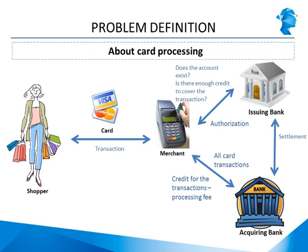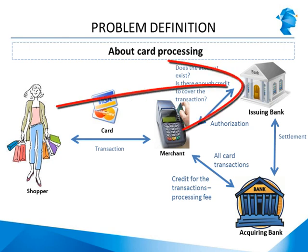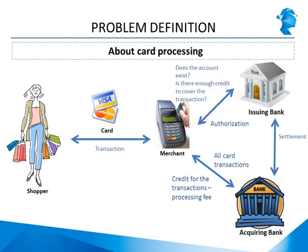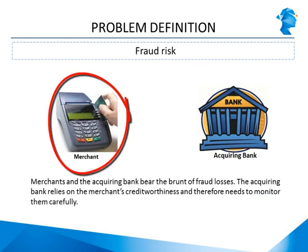Now, what happens in the case of a fraudulent transaction? In a fraudulent transaction, someone other than the cardholder has made the transaction. When the shopper sees the transaction on her credit card bill, she raises a complaint with the issuing bank, saying the transaction posted on her statement is not something she made and she does not want to pay for it. The issuing bank goes back to the acquiring bank — the seller's bank — and says the transaction it paid for was fraudulent, so it needs the money back. The acquiring bank then goes back to the merchant and demands repayment. It is ultimately the merchant who bears the brunt of the fraud.